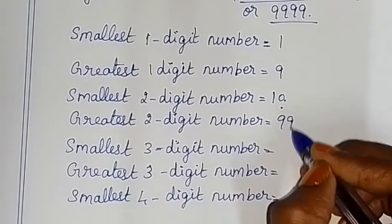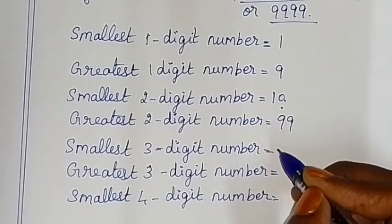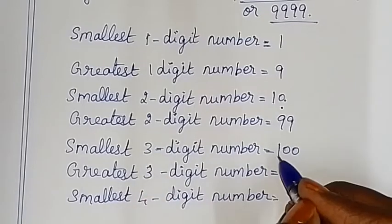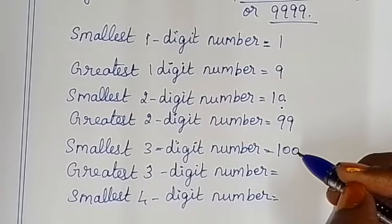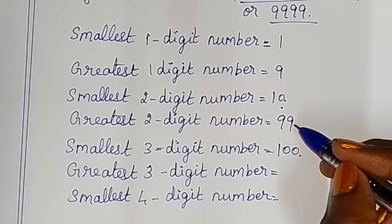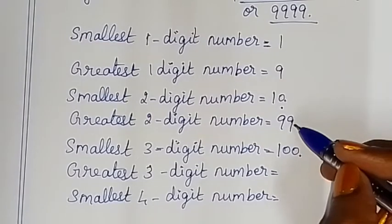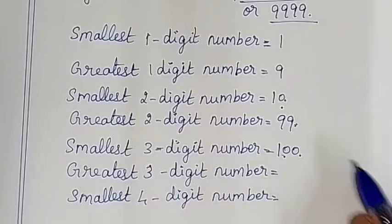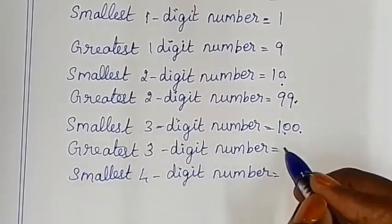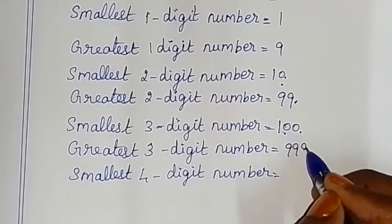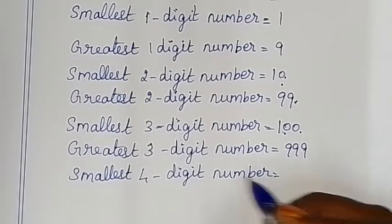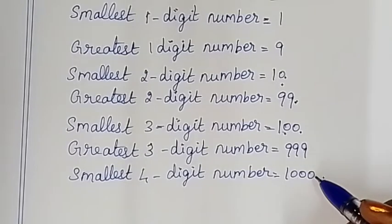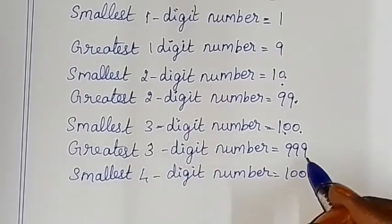The greatest two-digit number is 99, and its successor is the smallest three-digit number, 100. The predecessor of the smallest three-digit number is the greatest two-digit number. Similarly, the greatest three-digit number is 999, and its successor is the smallest four-digit number, 1000.